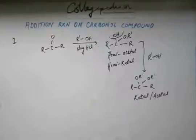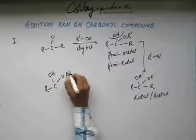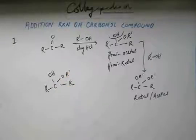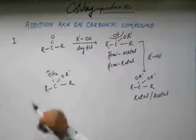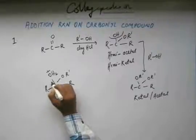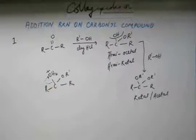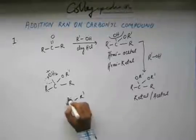Once you have hemiketal, next what will happen again HCl will come and again hydrogen will get added on the oxygen. So this OH will turn into OH2+. Now water is a good leaving group but it will leave as a neutral compound so it has to take away the bond, the electron of this bond in order to neutralize itself. The carbon will then become electron deficient.